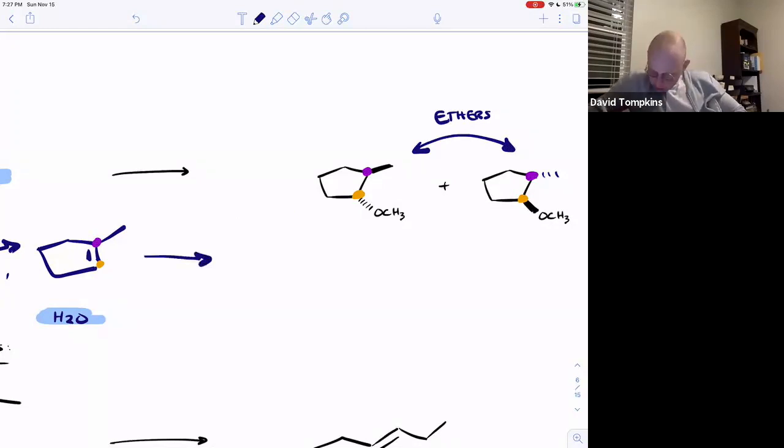and you want to install the oxygen at the less substituted carbon, like we said in a previous example, that's the hydroboration. And it won't give us the methoxy group, but it will give us an alcohol.